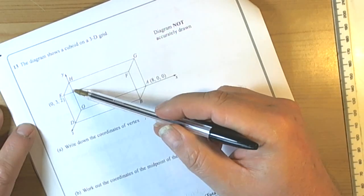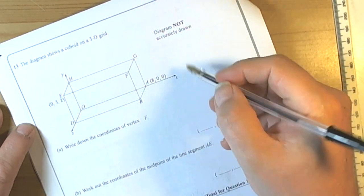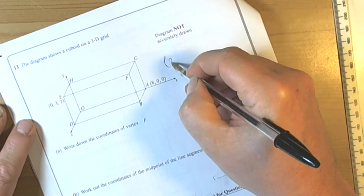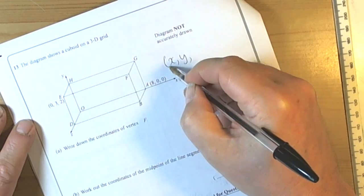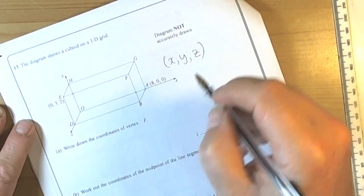Ok so here we've got a 3D coordinate grid and we must remember the 3D coordinates go in the order the X coordinate, the Y coordinate and then the Z coordinate.